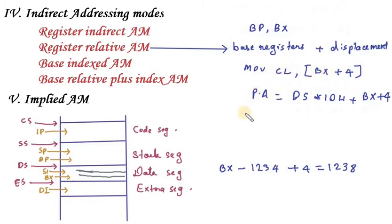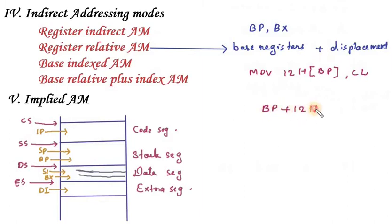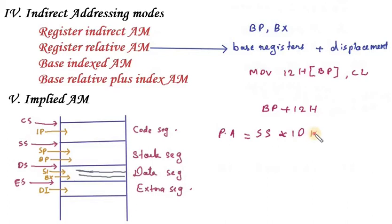Now let me show another example: MOV [BP + 12H], CL. In this case, the byte stored in CL is transferred to the address BP + 12H. Note that even without an explicit plus sign shown, it still implies BP + 12H. Since BP is in the Stack Segment, the physical address is calculated as: SS × 10H + BP + 12H.